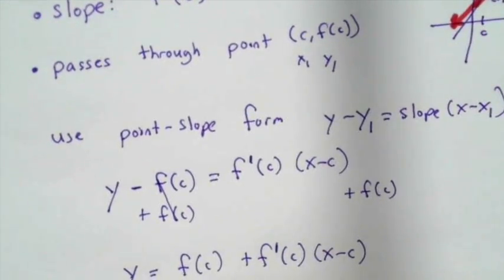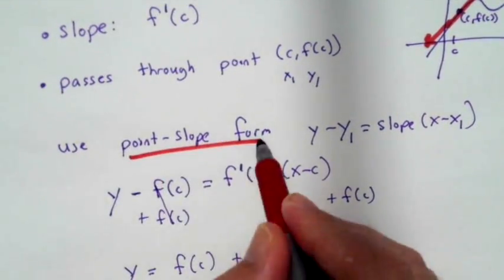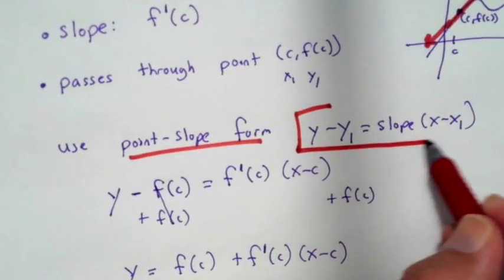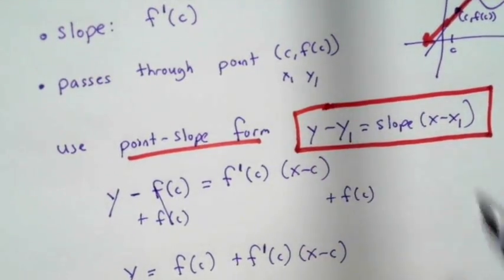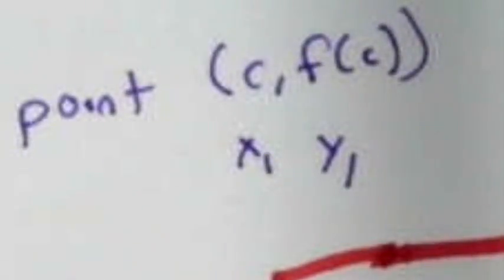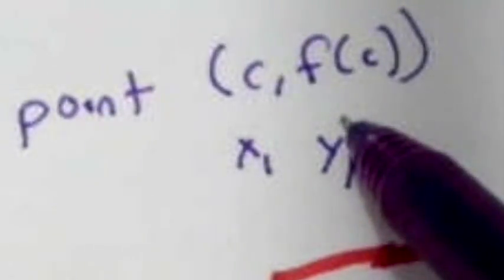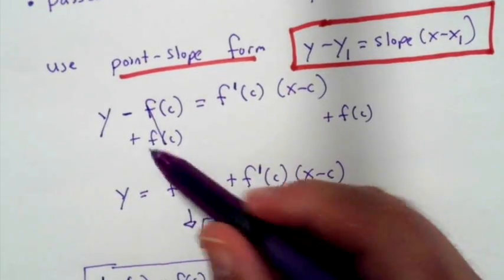Since we know the point and the slope, we can use point slope form: y minus y sub one is equal to slope times x minus x sub one. When we plug that in, we have that y sub one is f of c and x one is equal to c.